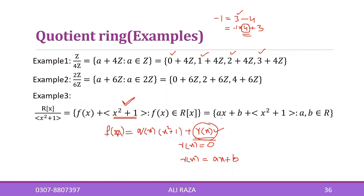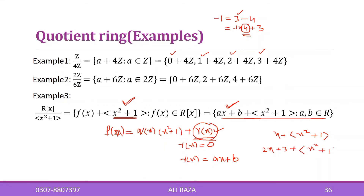So the possible remainders are either zero or a linear function of the form ax + b. Therefore, all distinct cosets in this factor ring are of the form ax + b plus the ideal. For example, x is one coset (a=1, b=0), and two x plus three is another coset. So all elements of this quotient ring are cosets represented by linear polynomials.